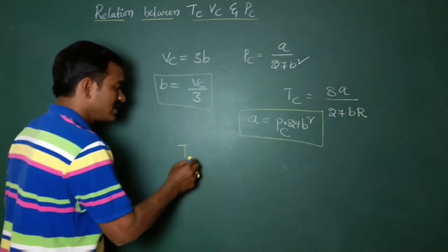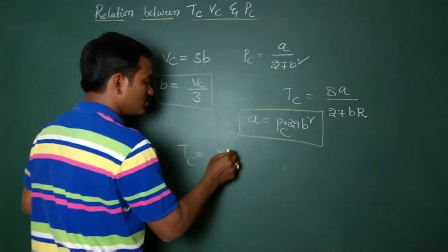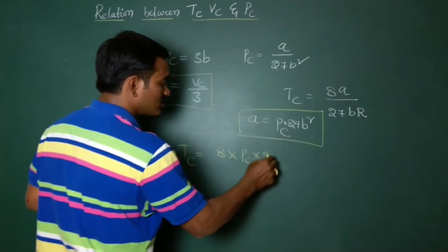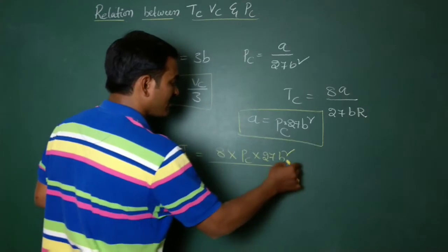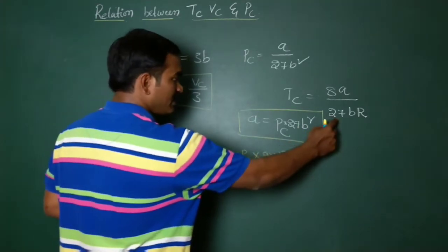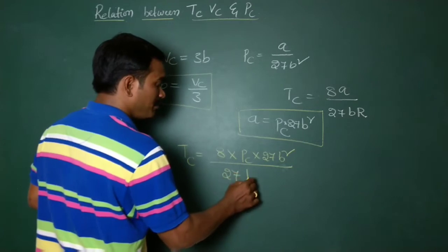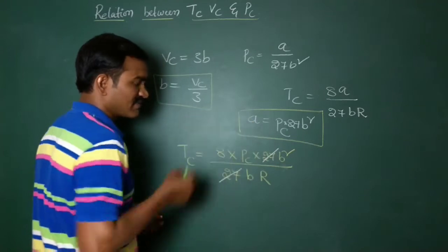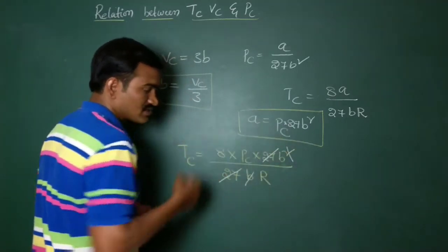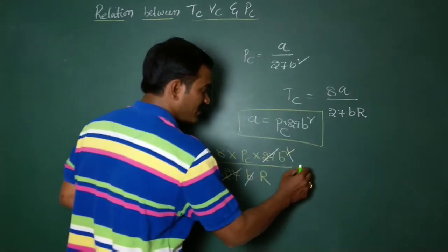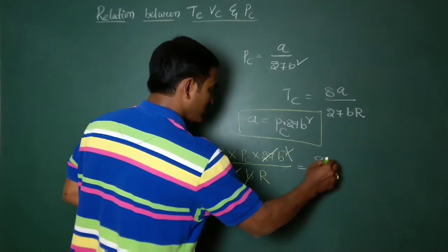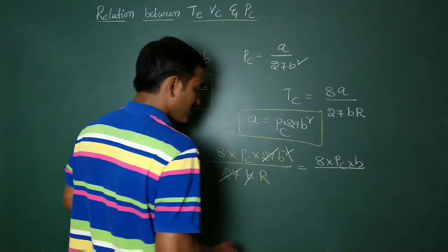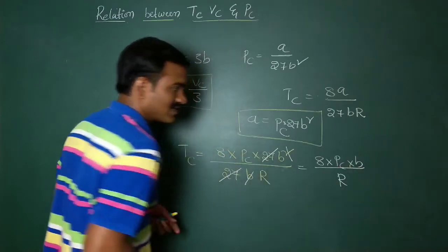So if you take like that, Tc equals 8A into... what is A? A equals Pc into 27B square divided by 27B. Now here you can take 27, 27 get cancelled and B and square here get cancelled. Now here what can we take? So finally, Tc equals 8 into Pc into B by R. Have you got it all?